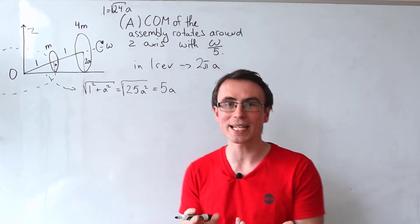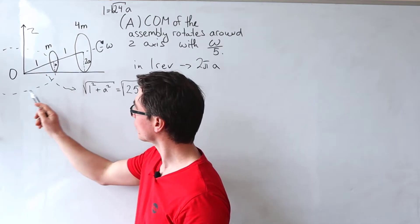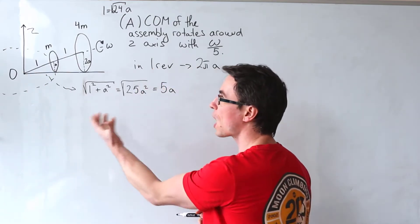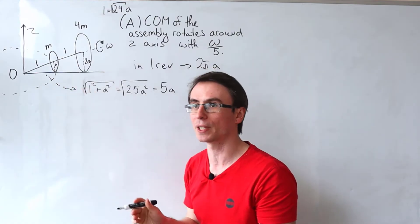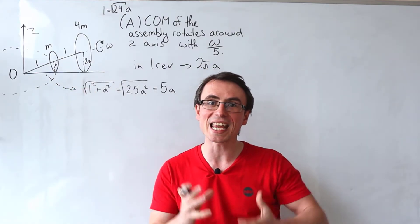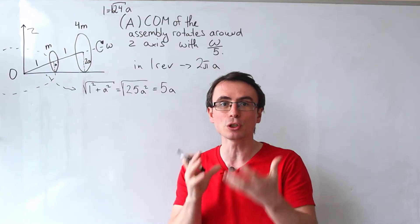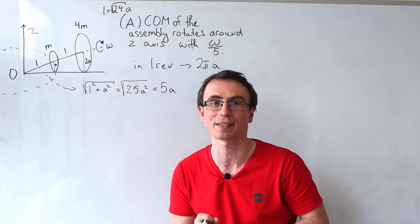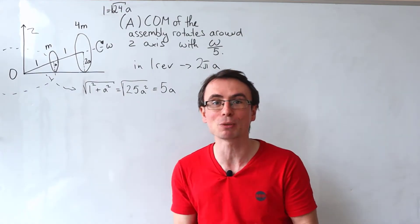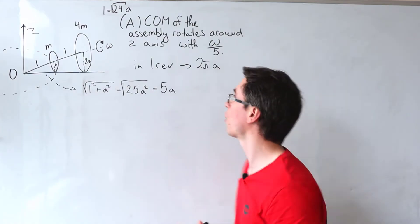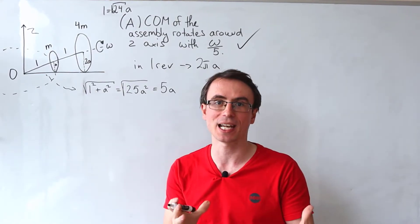With the time pressure of JEE Advanced, we should recognize that this larger circumference is five times the disk's circumference. For the same linear speed it takes five times as long to cover the same distance, so the angular speed must be five times lower. Therefore, statement A is correct.